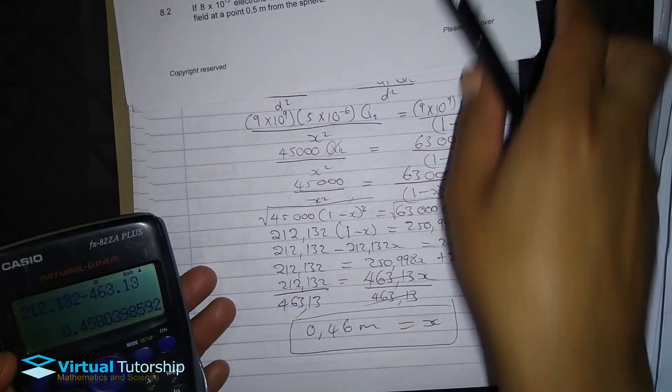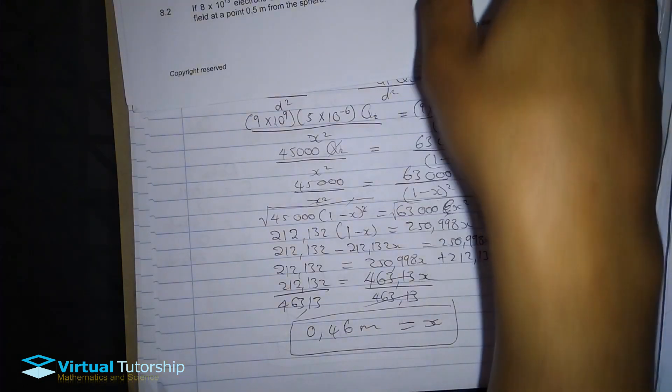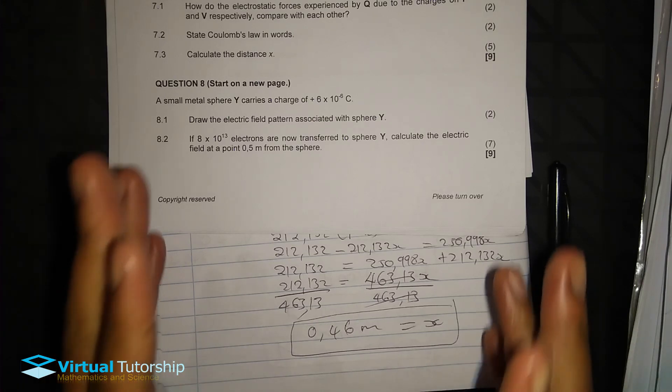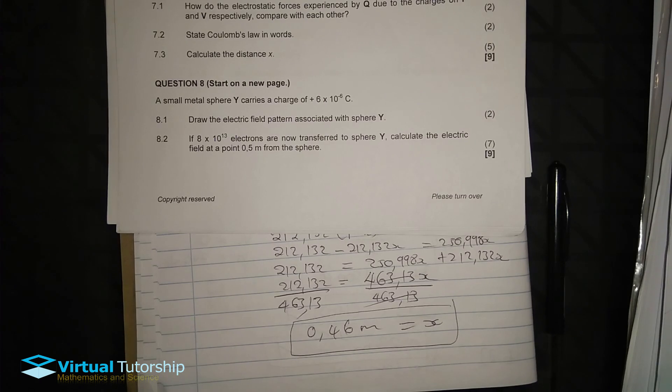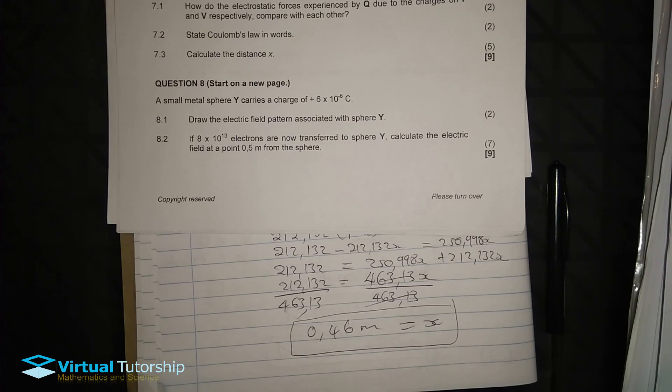So the distance here is calculated as 0.46 in two decimal places. So this is our answer in the video. While any description below for my questions concerning this question paper. So thanks for watching. And if you enjoy the video, please leave a like or comment in the comment section. Let us discuss if you have any questions. Right? Peace.